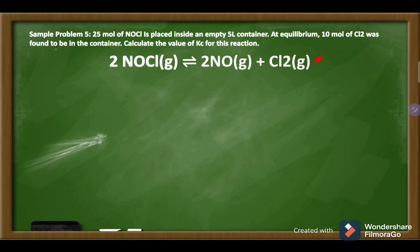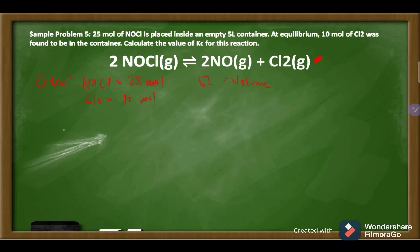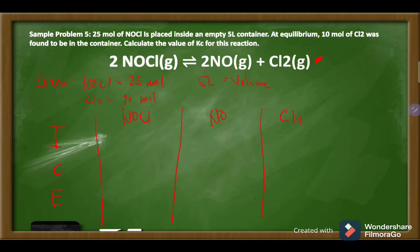First, identify the given: NOCl = 25 mol, Cl2 = 10 mol, and volume = 5 liters. ICE stands for: I = initial concentration, C = change in concentration, E = equilibrium concentration. The substances in the ICE table are NOCl, NO, and Cl2. The initial concentration of NOCl is 25 mol ÷ 5 L = 5 M. Since the container is empty, the initial concentrations of NO and Cl2 are both zero.